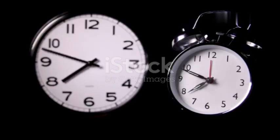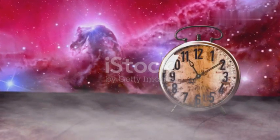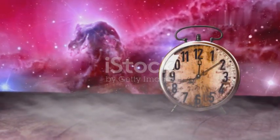Time slows down for objects in motion relative to a stationary observer. Imagine two identical clocks, one on Earth and one on a spaceship traveling at a significant fraction of the speed of light.